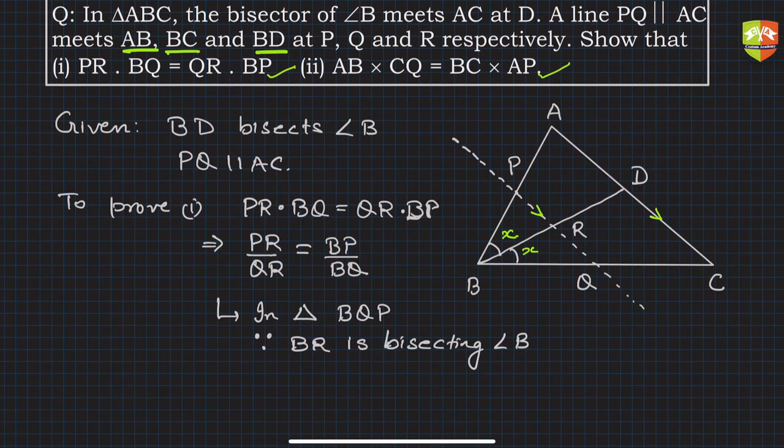BP/BQ = PR/QR, which is what we need to establish. Cross multiplying: BP × QR = PR × BQ.